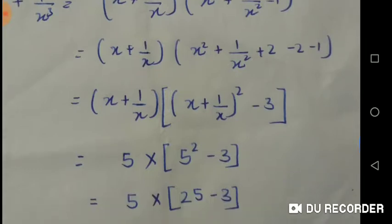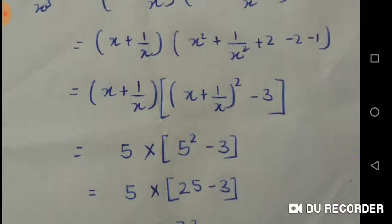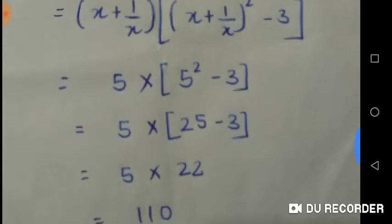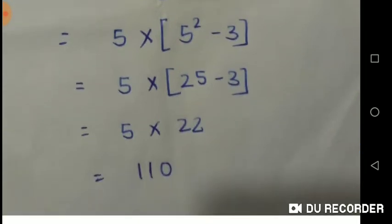It will give the equation as (x + 1/x)[(x + 1/x)² - 3]. I put the value of x + 1/x = 5 in all places where it is needed. Then I did the simple arithmetic calculation and it gives me the answer 110.